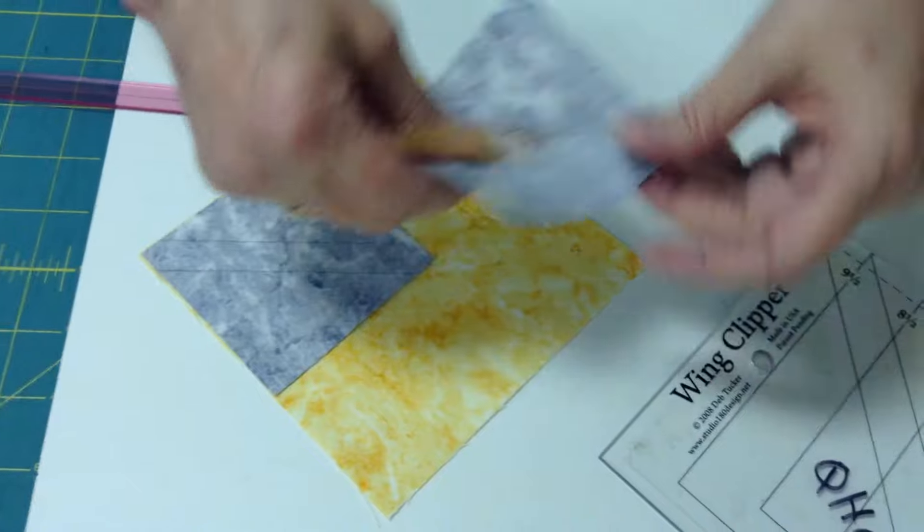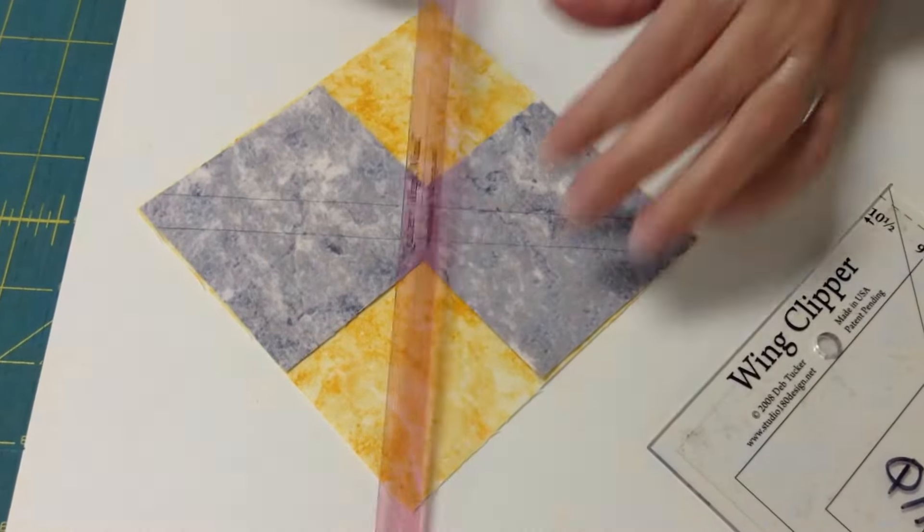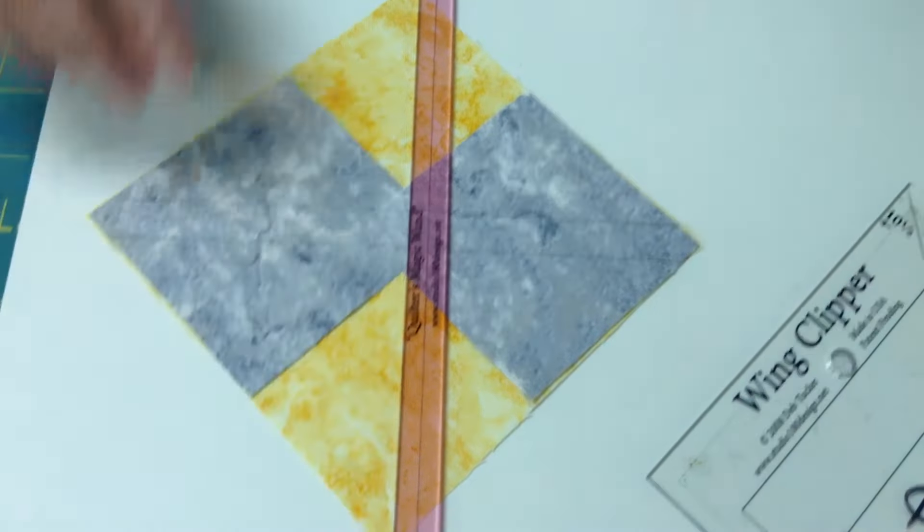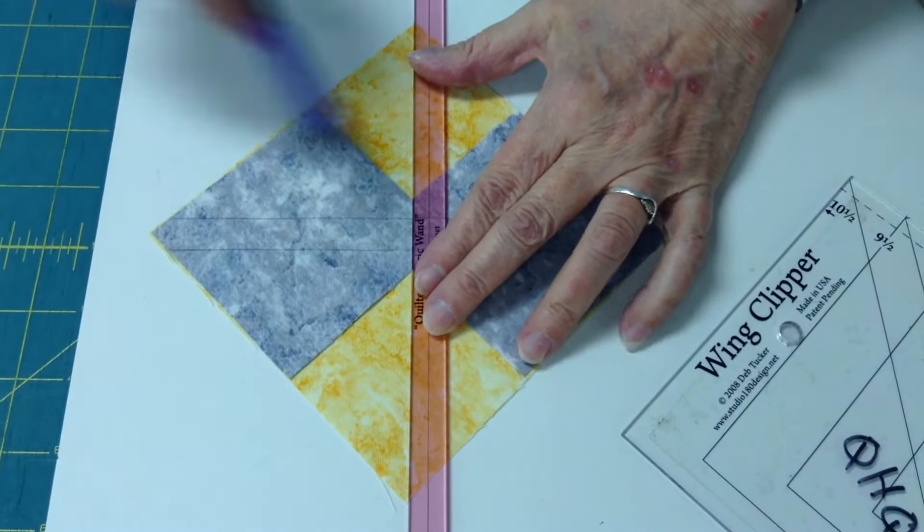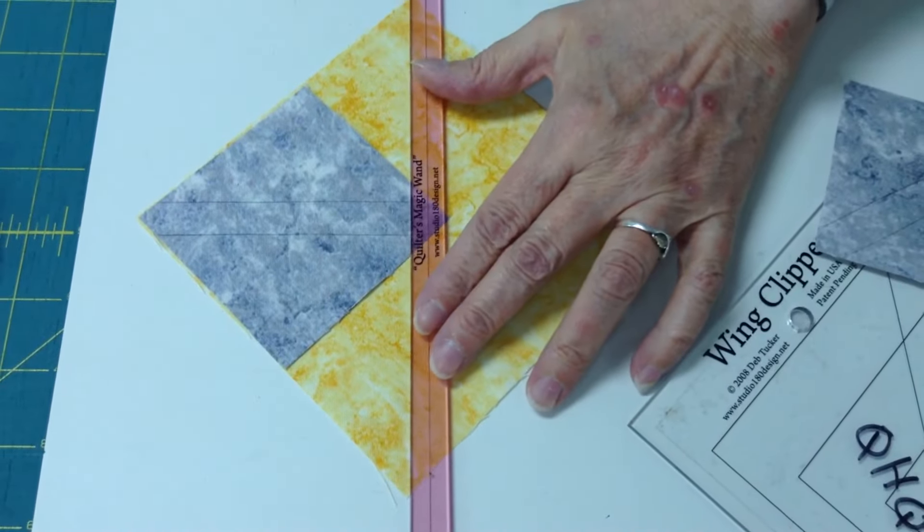So to combat that, what I have done is I take my Quilter's Magic Wand and I go from corner to corner, just like so. And I draw my line right here. I pull that one off and I draw a line right here.